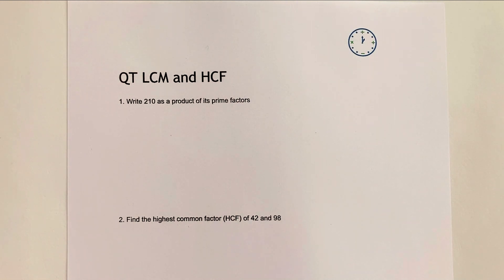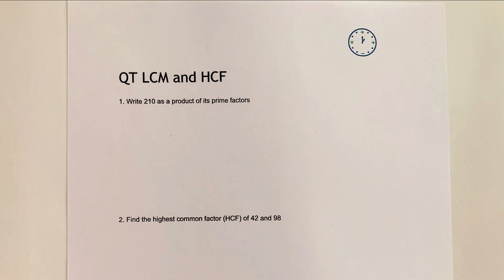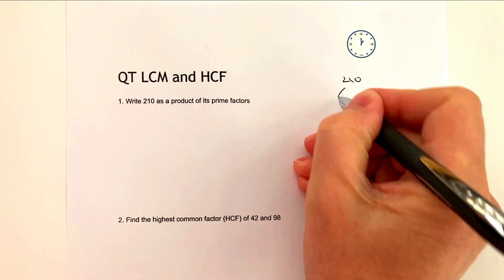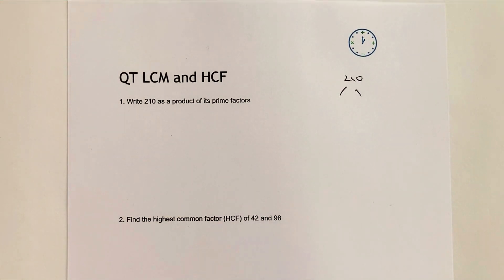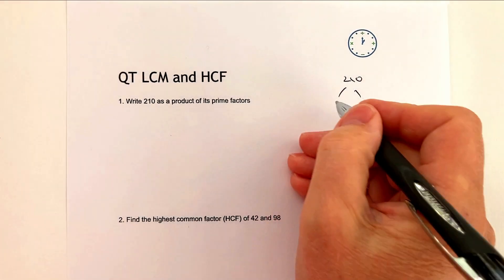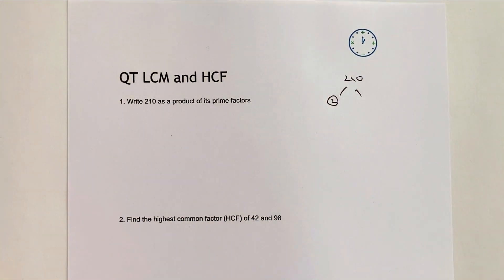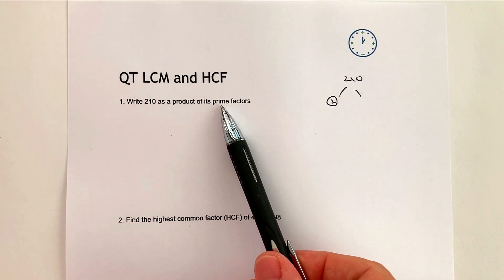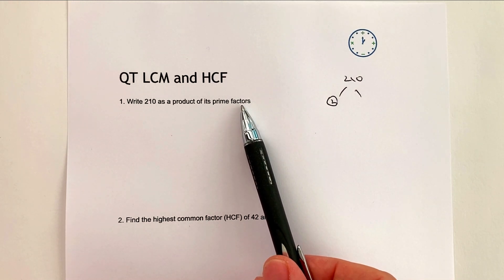One of the questions you might come across says something like: write 210 as a product of its prime factors. What we're actually doing is working out the factors of 210, and 'product' just means multiply. The most common way of doing this is to use a factor tree. Here's 210 — I always start with the lowest number that will divide into it, which is 2, and I put a circle around it because 2 is a prime number and a factor of 210.